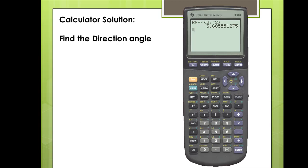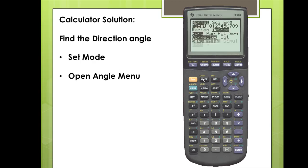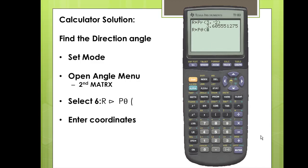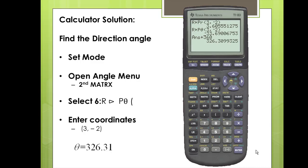Next we'll find the direction angle. We're already in degree mode so we're okay. We open the angle menu with second and matrix, then scroll down to the sixth option. We enter the rectangular coordinates 3, negative 2 and close off the function. Notice that our direction angle must be positive so we add 360 degrees, giving us a direction angle of 326.31 degrees.